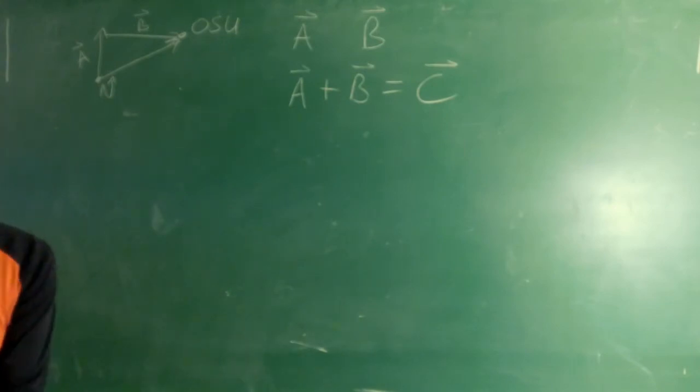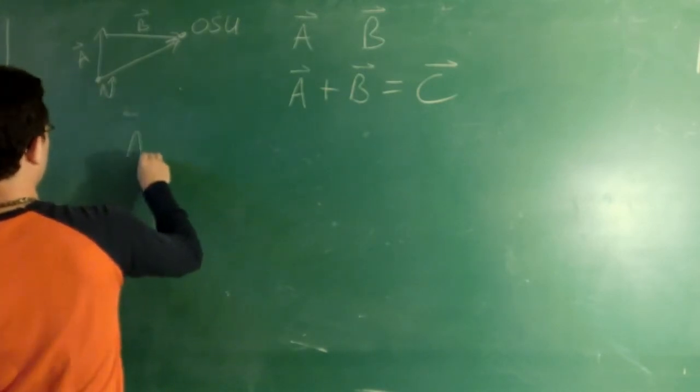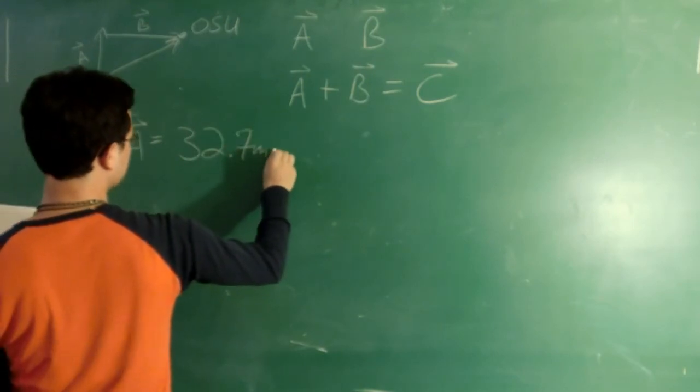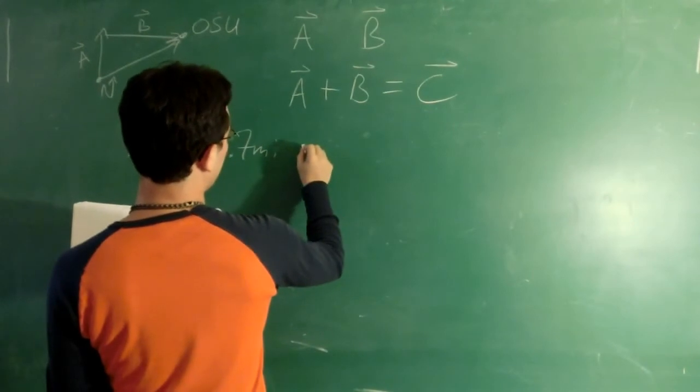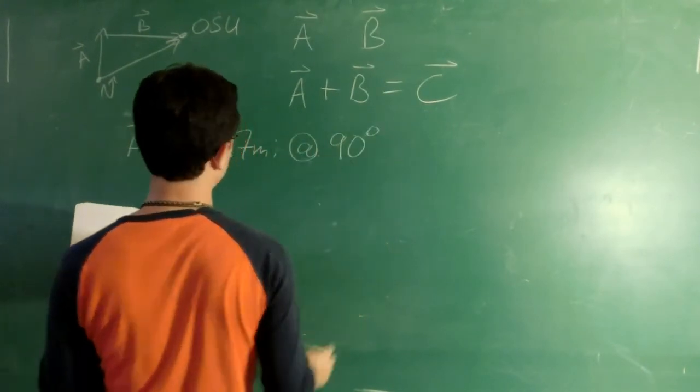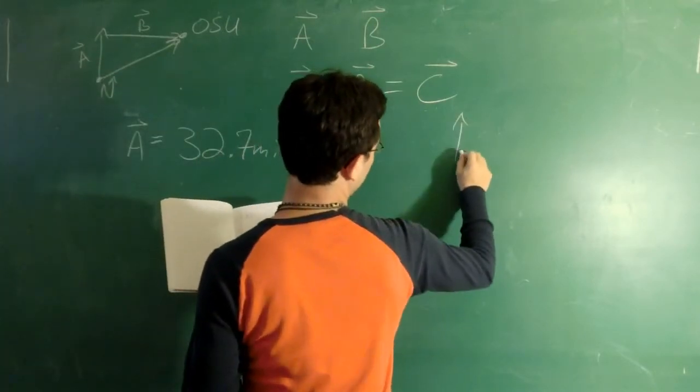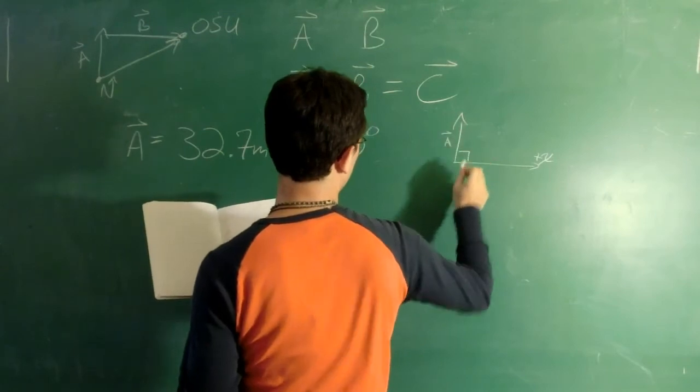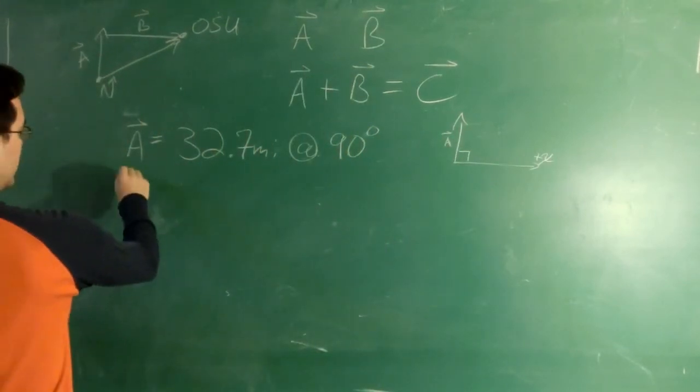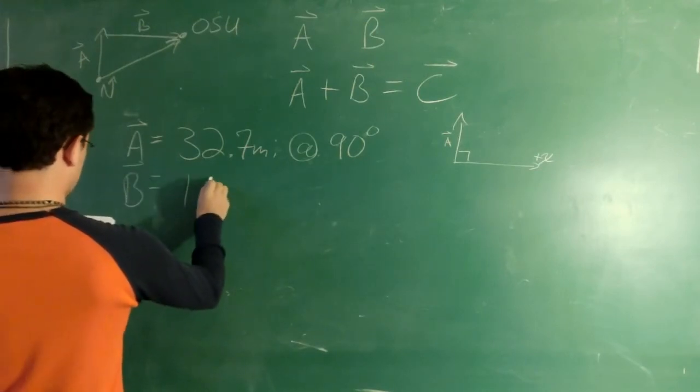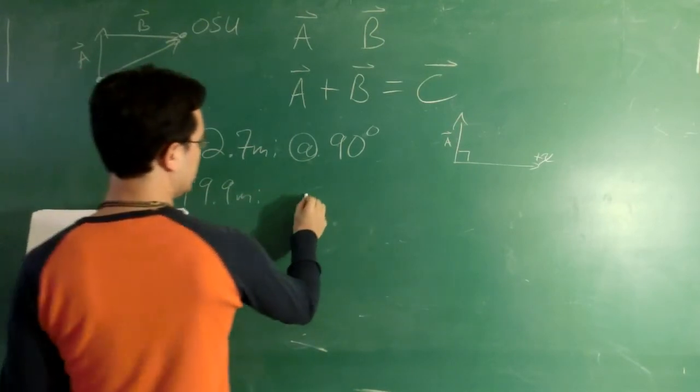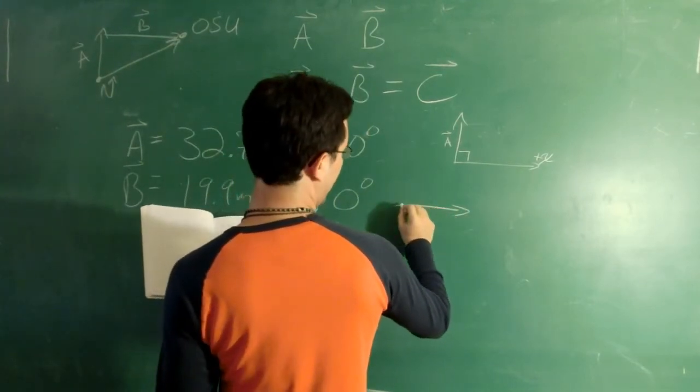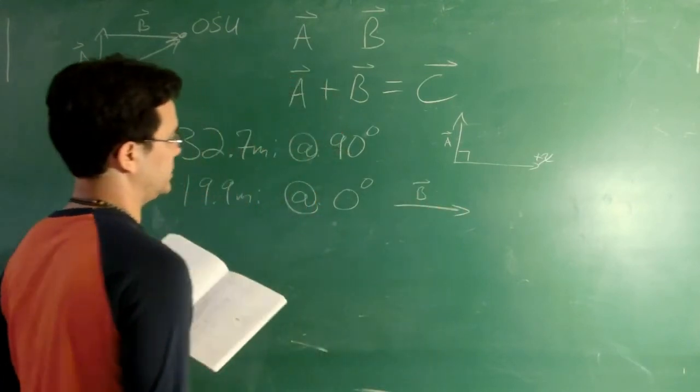Well, taking a look at this, and my friend Google Maps gave me that A is pretty much equal to 32.7 miles due north. So in this case, we'll say at 90 degrees. Because A points straight up, so it has 90 degrees with respect to the positive x-axis. And so this is our A, and it's got a length of 32.7. Well, B is equal to 19.9 miles at 0 degrees, because it points straight to the right. And that gives us an angle of 0 degrees with respect to the positive x-axis.